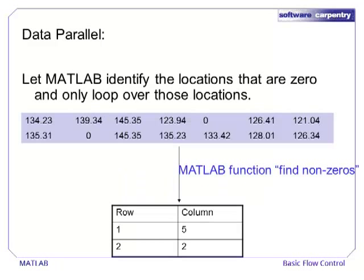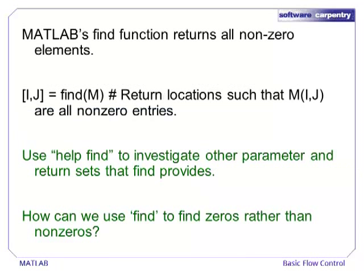A better solution would be to let MATLAB identify all the locations that are zero, so that we only have to loop over locations that definitely need to be replaced. It turns out that MATLAB has a function called find that does exactly the opposite of what we need. It returns all of the non-zero elements of an array. If we ask find for two return values, it will return an array of row values and an array of column values. Each row-column pair gives a non-zero entry in the array.